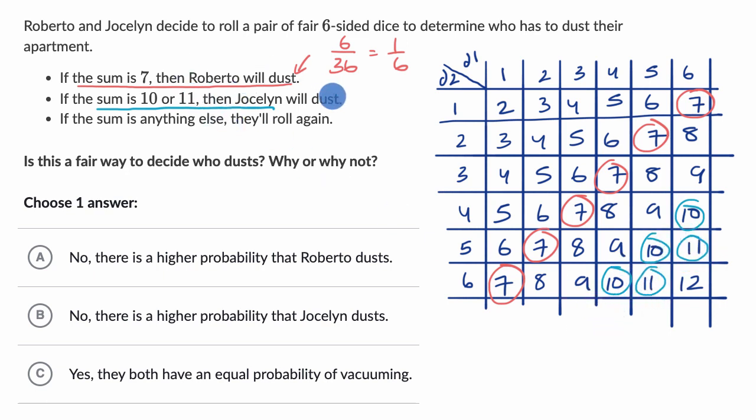So this is only happening five out of the 36 times. So in any given roll, it's a higher probability that Roberto will dust than Jocelyn will dust. And of course, if neither of these happen, they're going to roll again.